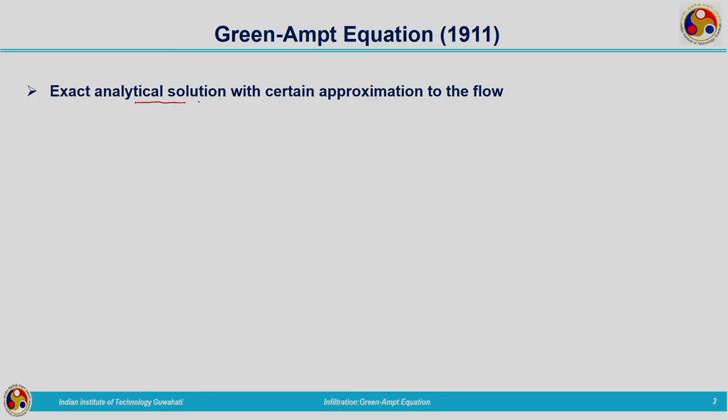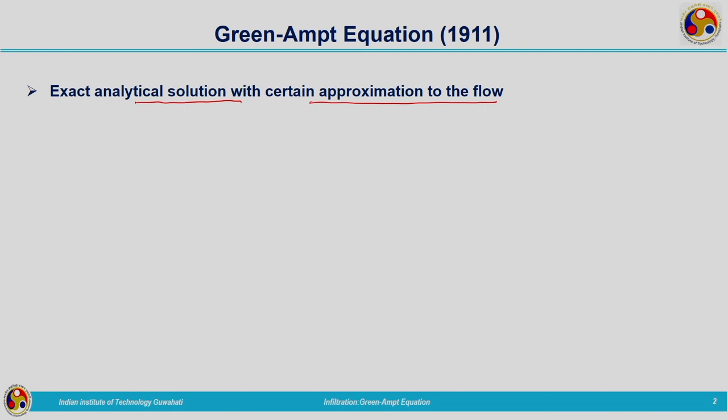The Green-Ampt equation is derived in the year 1911. It provides an exact analytical solution with certain approximations to the flow through the unsaturated zone. This equation is derived based on fundamental principles — that is, continuity and momentum equations. First we will derive the continuity equation and then the momentum equation, and after combining these two fundamental equations, the Green-Ampt equation is derived.